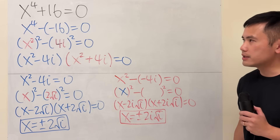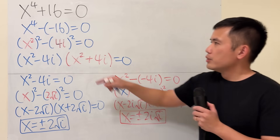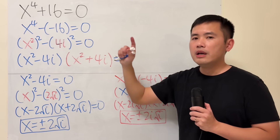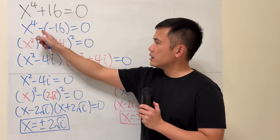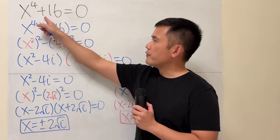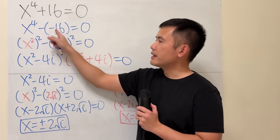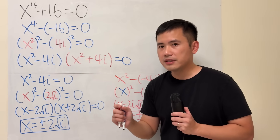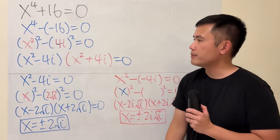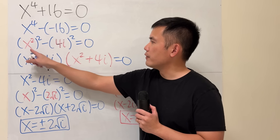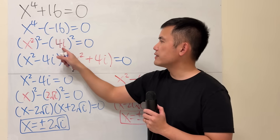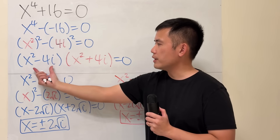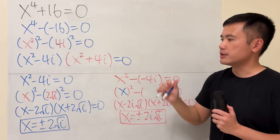Let's go over what you did first. You want to solve x to the fourth power plus 16 is equal to 0. You use the difference of two-squares formula, first writing this as minus minus 16, and using the fact that i-squared gives us negative 1. So you put this in the form of x-squared squared minus 4i-squared, and then use the difference of two-squares to get this times that equals 0.